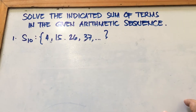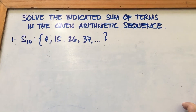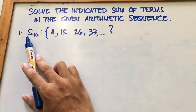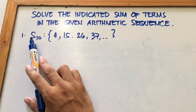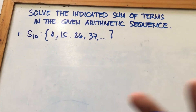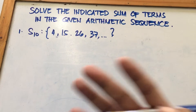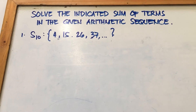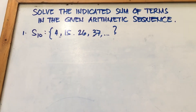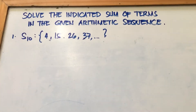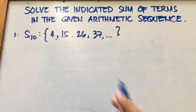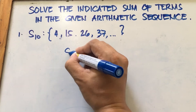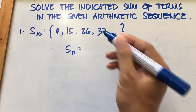One of the indications that it is an arithmetic series is because of the variable S. So if that is a series, that is a capital letter S. If it's a small letter, it only indicates a sequence. So now, since this is an arithmetic series problem, please take note that we have two formulas for arithmetic series.